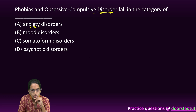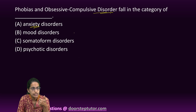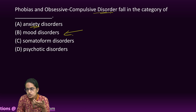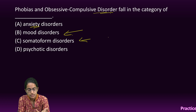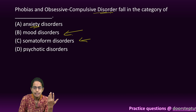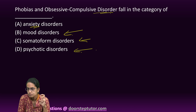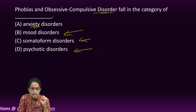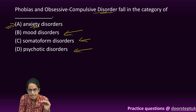Phobias and obsessive compulsive disorders are part of anxiety disorders. Mood disorders talk about a person's emotional state. Somatoform disorder involves physical ailments represented because of psychological illness that cannot be explained through a general medical condition. Psychotic disorders are those where mental functioning is highly disturbed, involving delusions and hallucinations. So phobias and OCD, being mild forms, are part of anxiety disorders.